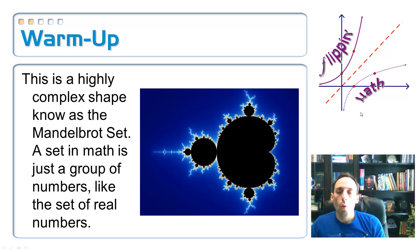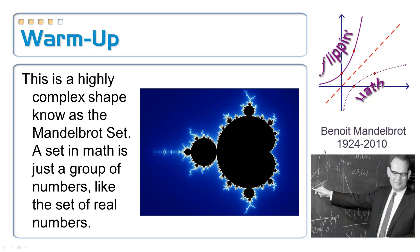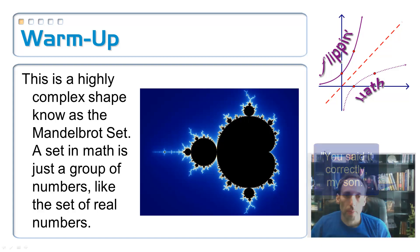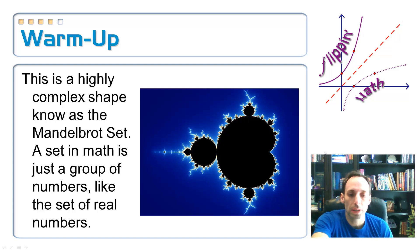So we're going to warm up first, talking about a shape that's in this picture, this really complex shape called the Mandelbrot set. Now it's named after a mathematician, French mathematician named Benoit Mandelbrot. He's dead now, so he's not going to get on to me for not pronouncing his name correctly. But anyway, a set in mathematics is just a collection of numbers. So just like the real numbers is a collection of numbers, the Mandelbrot set is the same kind of thing.